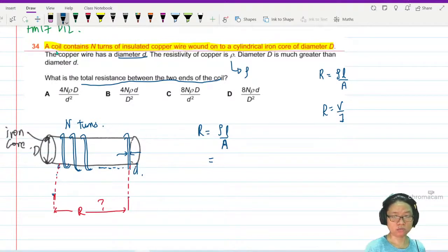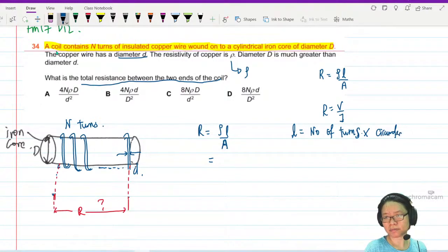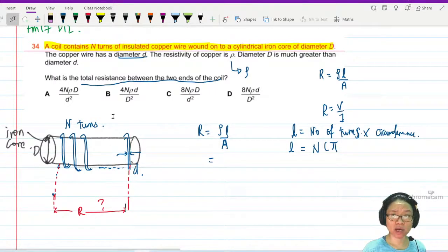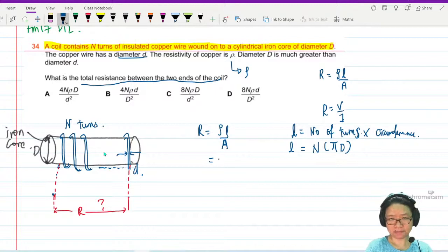Okay, so in ideal situations, to find the length of the wire L, L will be equal to the number of turns multiplied by the circumference. Been looking for a lot of circumference today. What's the number of turns? N, no? What's the circumference? Pi D, no? Big D or small d? We wind the wire around the iron core. So it's the circumference of the iron core, big D. Okay, so this will be N, pi, D.